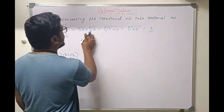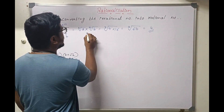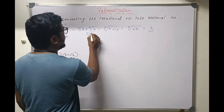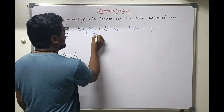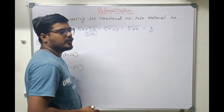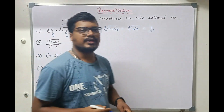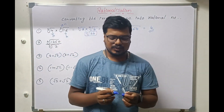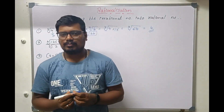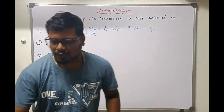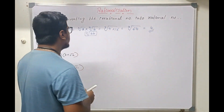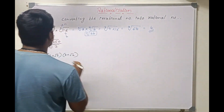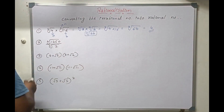The formula we used is: nth root of a into nth root of b equals nth root of a into b. This is the formula we need to use to simplify irrational numbers involving multiplication of roots.